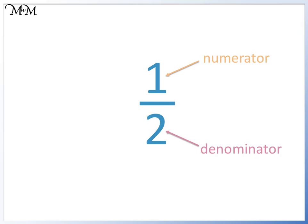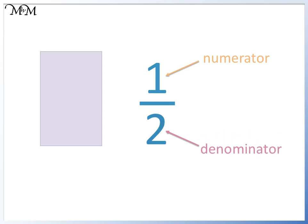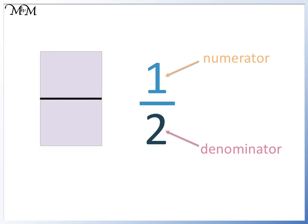Let's look at what these numbers mean. The denominator, which is 2, tells us how many parts the shape is divided into. So this shape is divided into two parts. The numerator, which is 1, tells us how many parts are shaded in. So one of the parts is shaded in.